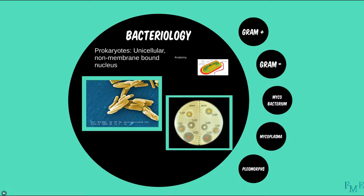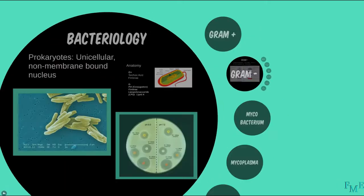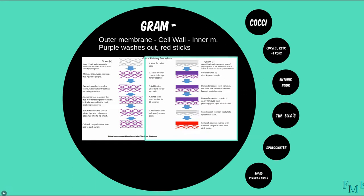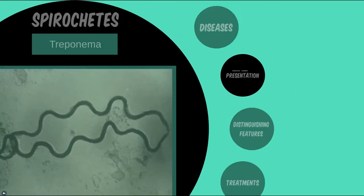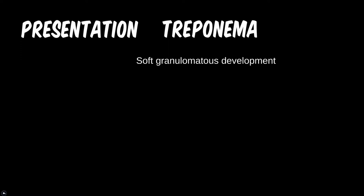With only three main genera to discuss, there should be relatively little confusion with the presentations and related diseases in this tier. For Treponema, name the term and the stage of disease associated with the presentation. What would you call a soft skin granuloma that develops on a syphilitic patient? These are known as gummas and typically define the tertiary stage of syphilis.